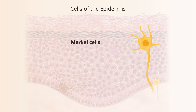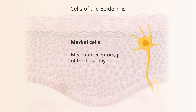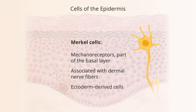Another important cell type is the Merkel cell — named after a German who described them a long time ago. They are a relatively rare component of the skin but nevertheless really important. They are part of how we have touch sensation, especially light touch. Their cell body sits within the layer of keratinocytes, but they have a neural process that extends through the basal layer into the dermis to connect with neurons there. They are also ectoderm-derived.